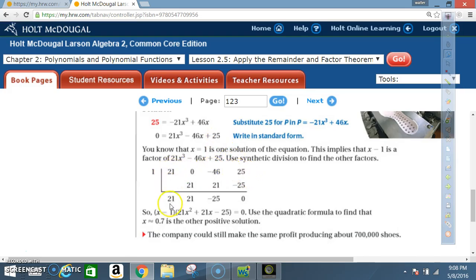We bring that 21 down. 1 times 21 is 21. 0 plus 21 is 21. 1 times 21 is 21, and negative 46 plus 21 is negative 25. 1 times negative 25 is negative 25. 25 minus 25 is 0.